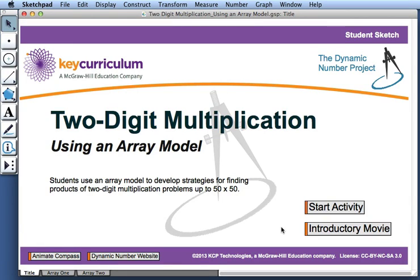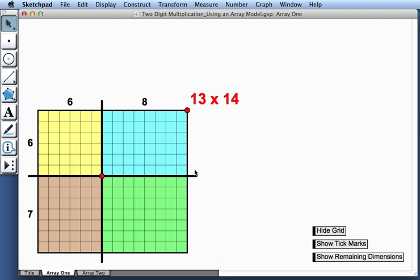This movie describes how to use the activity two-digit multiplication using an array model. Here we have an array that represents 13 times 14.